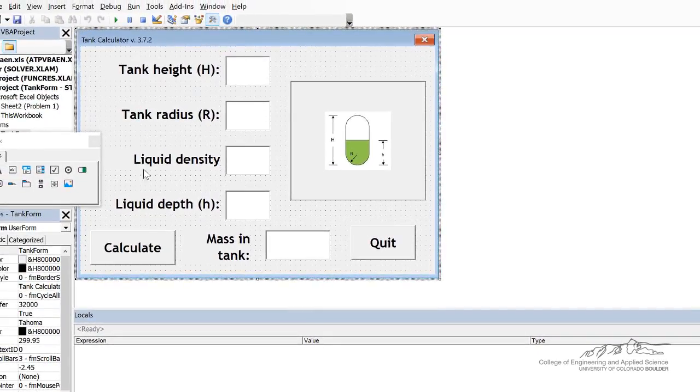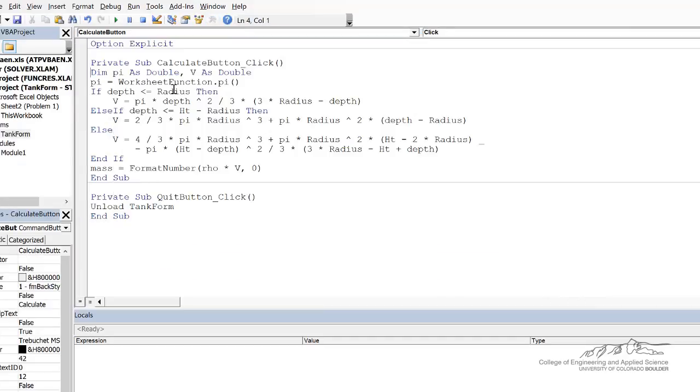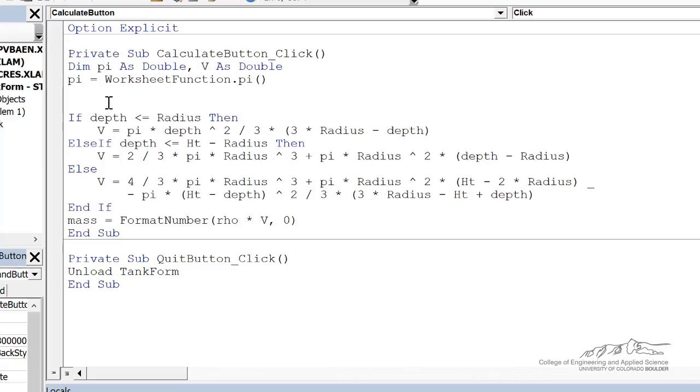So what I'm going to do first is I'm going to add in some statements into the code to verify that h, r, rho, and the depth are all positive. All this input validation is going to go at the very beginning of the sub, right after we define what pi is.